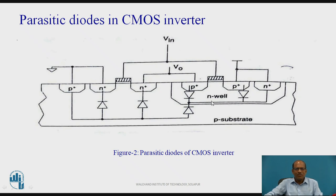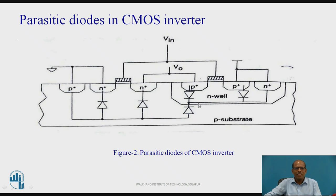Only PMOS or NMOS conducts at a time. When PMOS is conducting, current flows from VDD through a diode which is reverse biased, and goes to ground. In the other condition, PMOS is in off state and NMOS is conducting, so current flows from VDD through a diode again which is reverse biased, then through NMOS to ground. In both possibilities, the parasitic diode is reverse biased, and this reverse leakage current is responsible for static power dissipation.